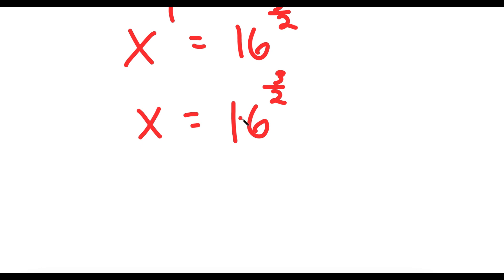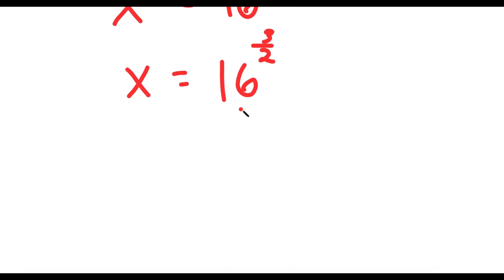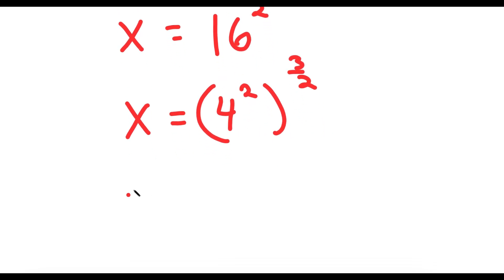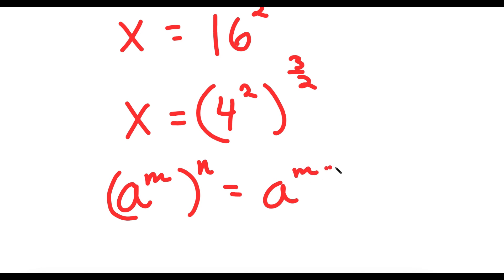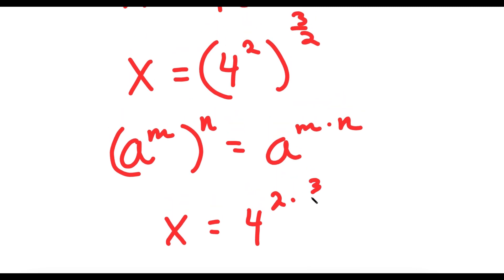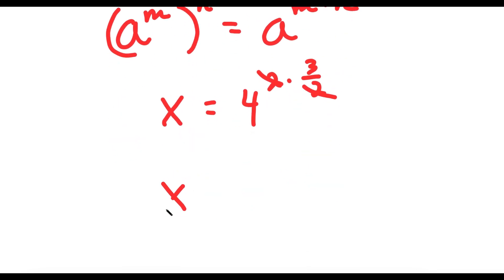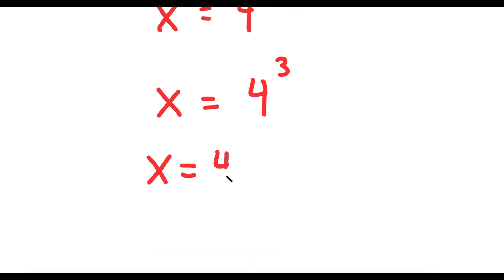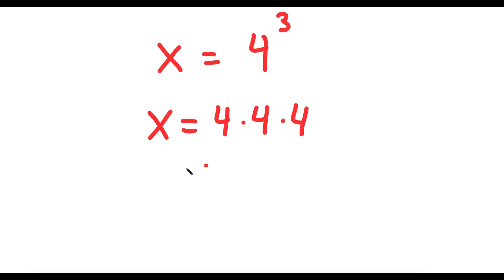I'm not done yet because I still need to simplify this. So 16 to the power of 3 over 2 is the same thing as 4 squared to the power of 3 over 2 — all I did was rewrite 4 squared in place of 16. And remember, a to the power of m to the power of n is equal to a to the power of m times n. So this equals 4 to the power of 2 times 3 over 2. The two 2's cancel out and I get x is equal to 4 to the power of 3, which is 4 times 4 times 4, equal to 64.